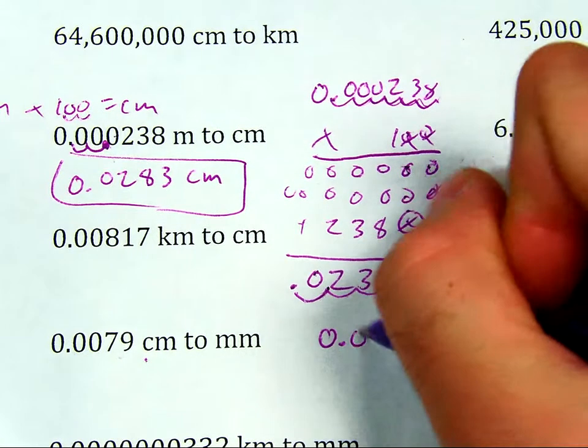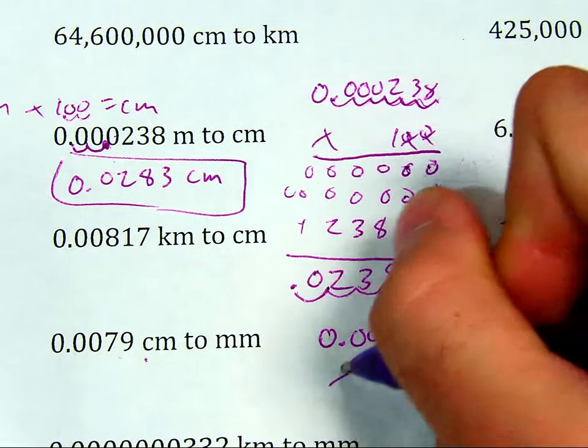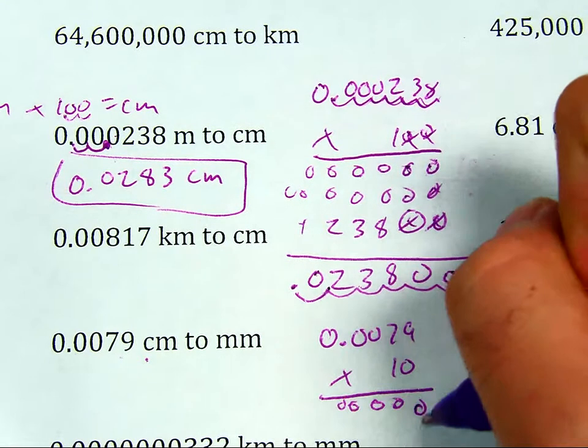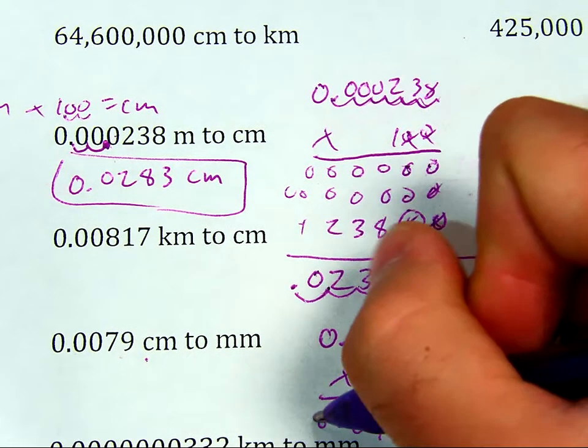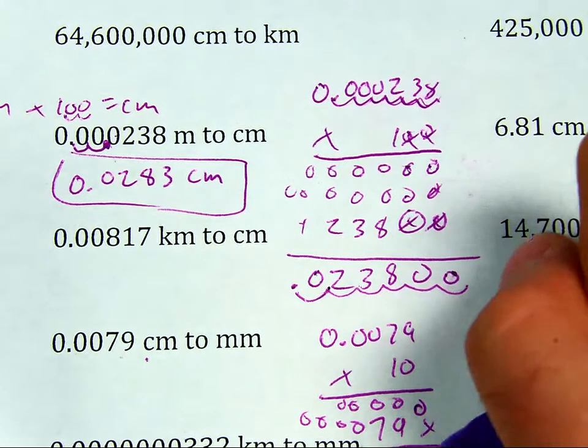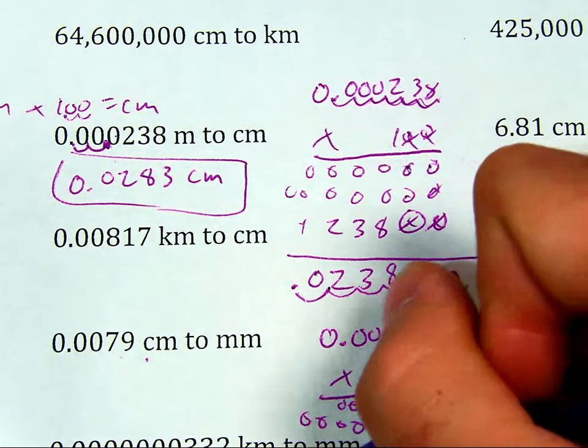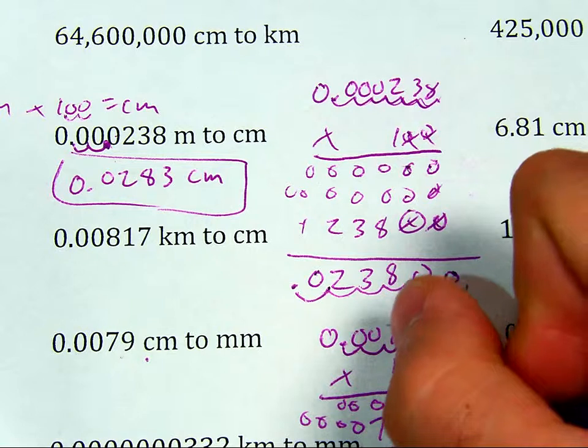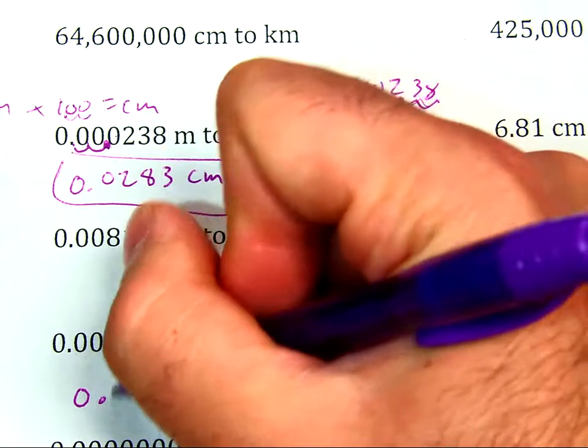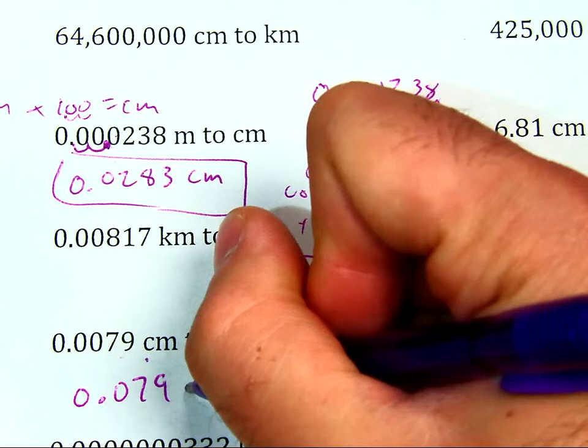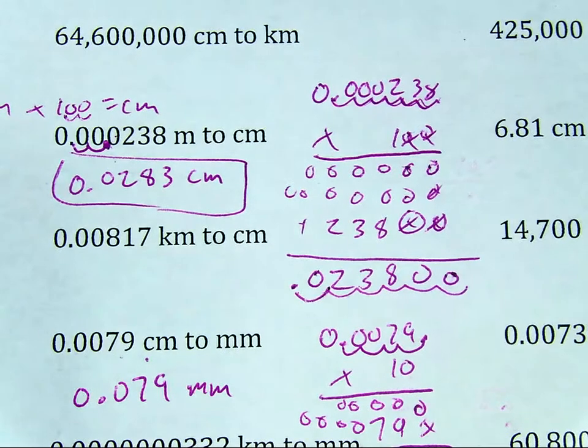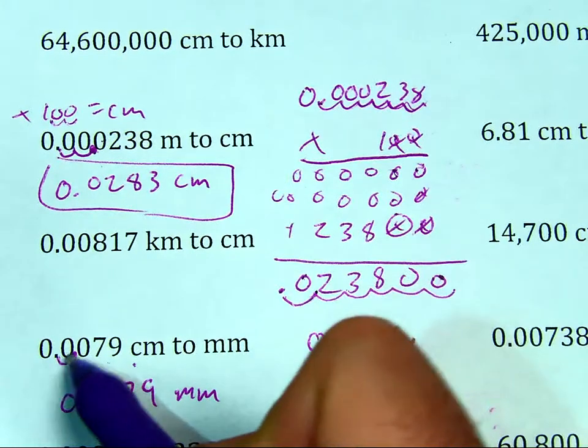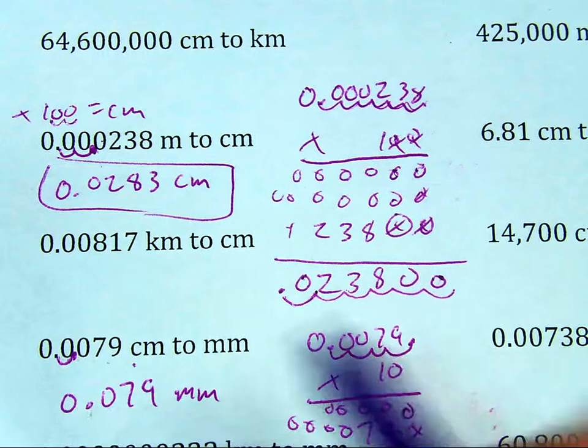So for this one, I just do 0.0079 times 10. And I should get zeros across the board. Placeholder, 97, bunch of zeros. Add them up, I get 0, 97, and a bunch of zeros. I have 1, 2, 3, 4 decimal places. So I get 1, 2, 3, 4 decimal places. I should have 0.079 millimeters. I'm just going to make my life easier. Since I know it's times 10, I can just move over one place. 0.079, totally fine.